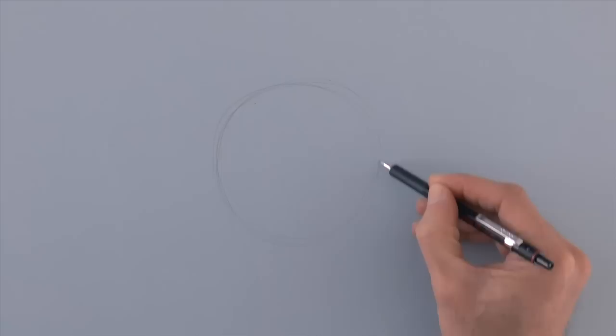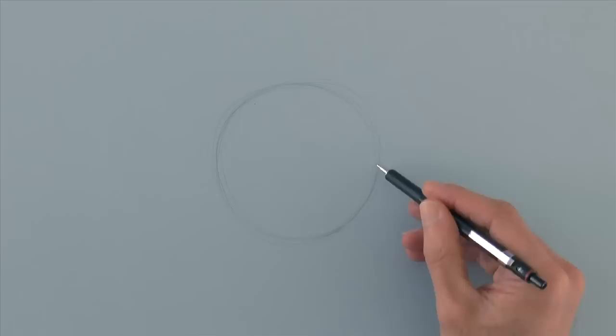We start by sketching a circle. The way I do this is making many circles trying to correct the path as I go. Then go over the line that you see correct.